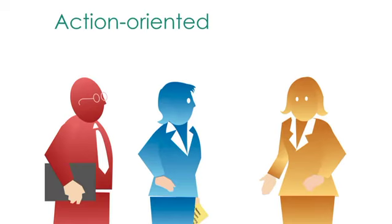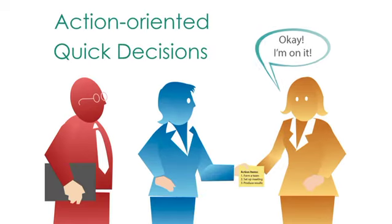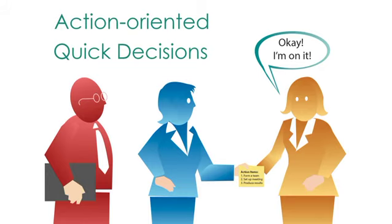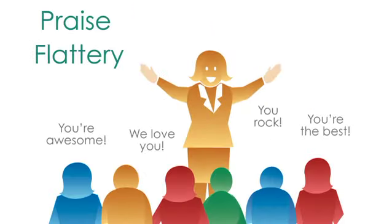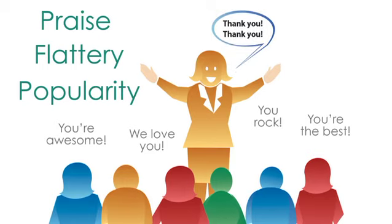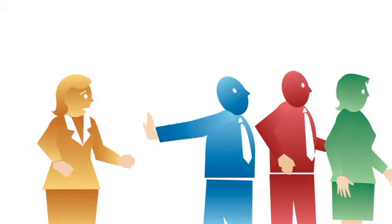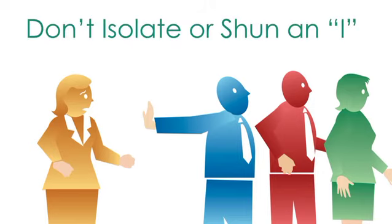They are action-oriented and make quick decisions, so get to the action items quickly and be sure to write down any details for them. They will be motivated by praise, flattery, and popularity as they like social recognition. They fear social rejection, so the last thing you want to do with an I is to isolate or shun them.